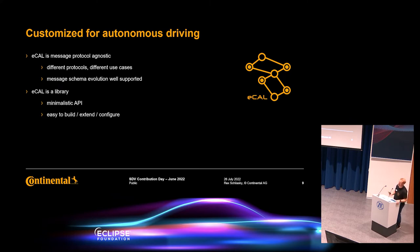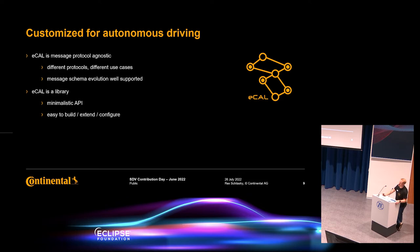The next point is that eCal is not an ecosystem — eCal is more a library. It's pure C++, has a CMake build system, some dependencies, and the eCal core itself is very minimalistic. It is easy to build, easy to extend, and has almost zero configuration. That means we can apply this core functionality on a lot of different targets.